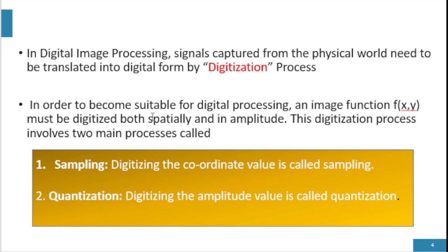In order to become suitable for digital processing, an image function f(x, y) must be digitalized both spatially — in x and y coordinates — and in amplitude, where f is the amplitude function. The digitalization process involves two main processes called sampling and quantization.